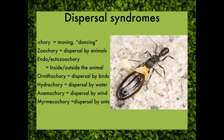Now, with the pollination syndromes, those all ended in -phily. With fruit dispersal syndromes, they all end in -chory. Chory comes from a Greek word that means moving. You've probably heard of choreography, which is the planning of dances. So I like to think of -chory as dancing — the dance of the fruits.